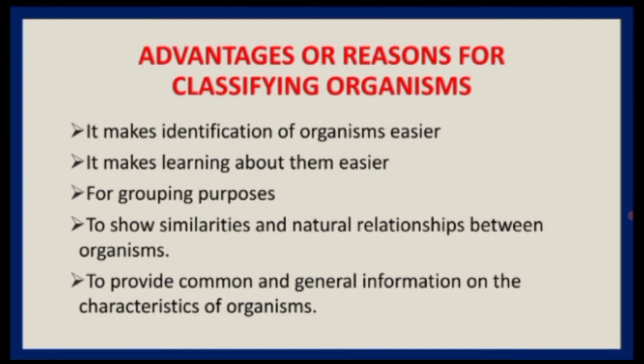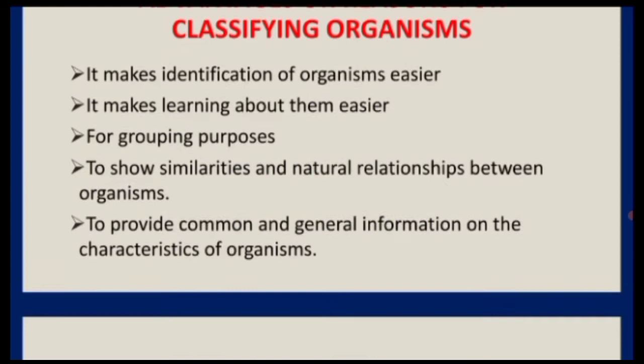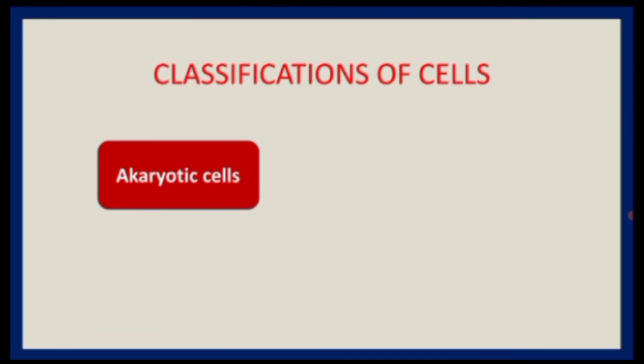Now let's look at the classification of cells. Cells are the basic functional unit of life. All cells are classified on the basis of the presence or absence of a nucleus, and if present, whether it is membrane-bound or not. We have three types of cells: the acaryotic cell, the prokaryotic cell, and the eukaryotic cell.